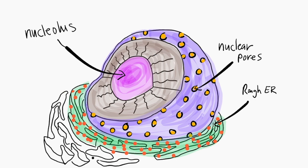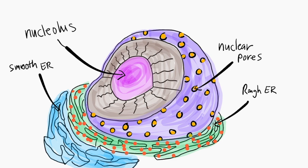There's also a smooth endoplasmic reticulum, or smooth ER. It doesn't have any attached ribosomes. Smooth ER creates phospholipids for the cell membrane and also helps produce testosterone. It's also involved with detoxification of substances in the liver. The endoplasmic reticulum generally forms transport vesicles for bulk transport.